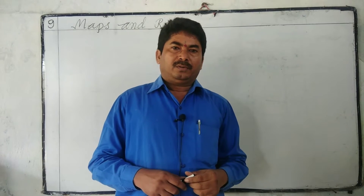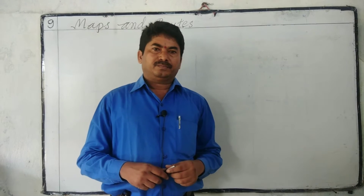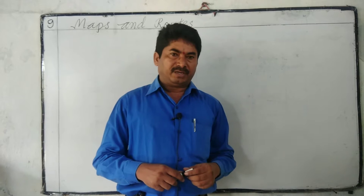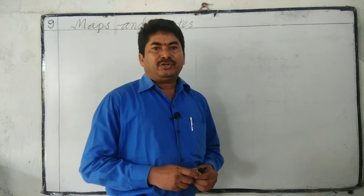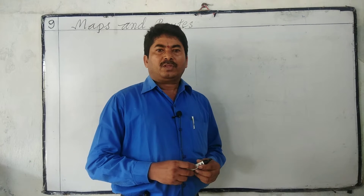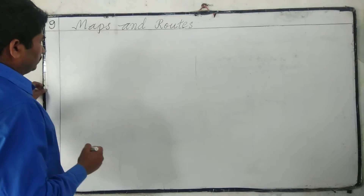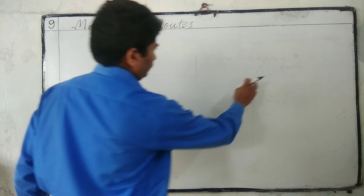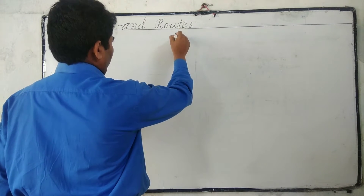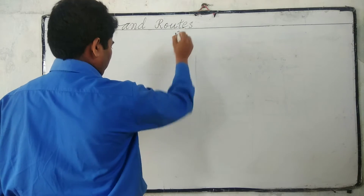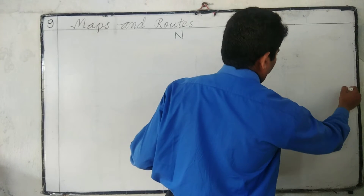What is a map? A map is a representation of the Earth's surface. Now I will show you the map of my home. In a map, we have to indicate directions.